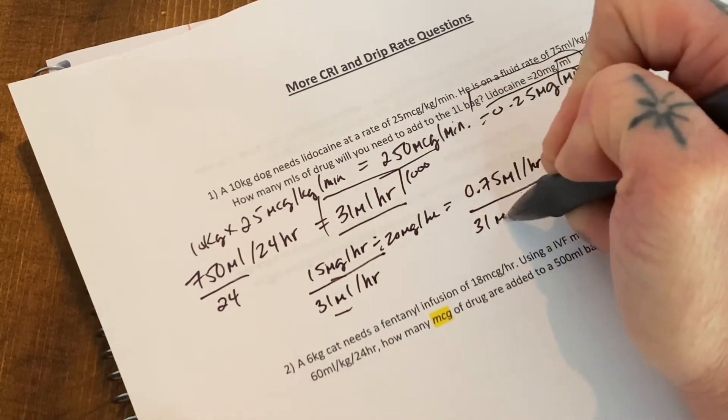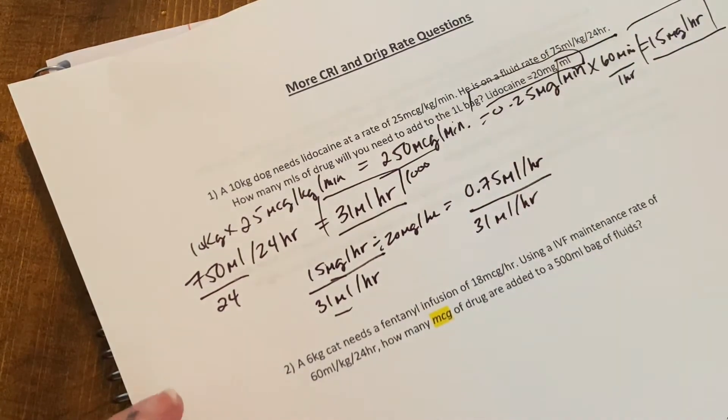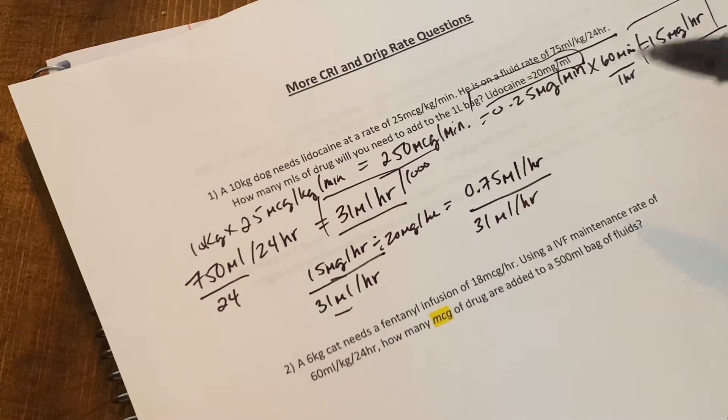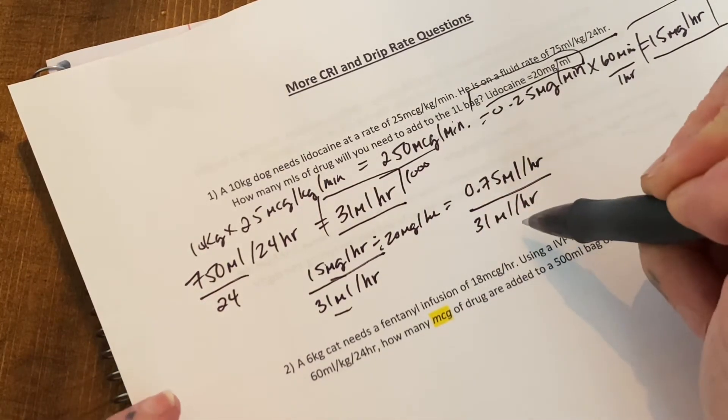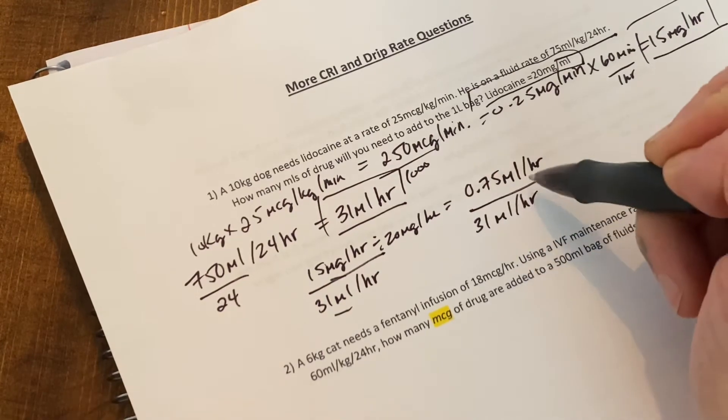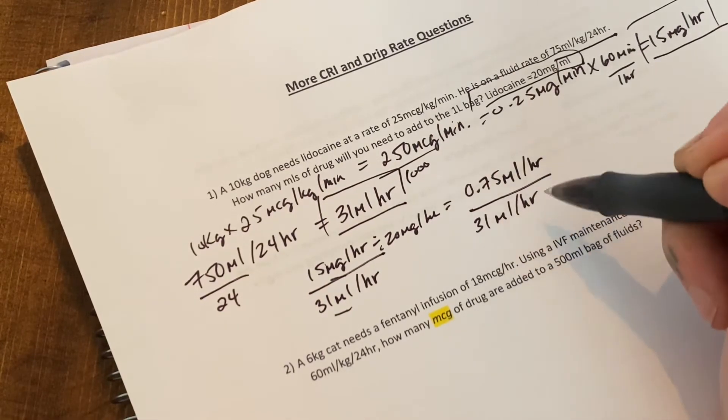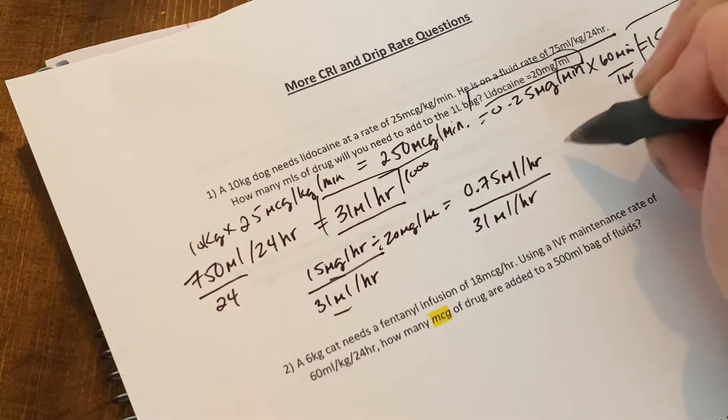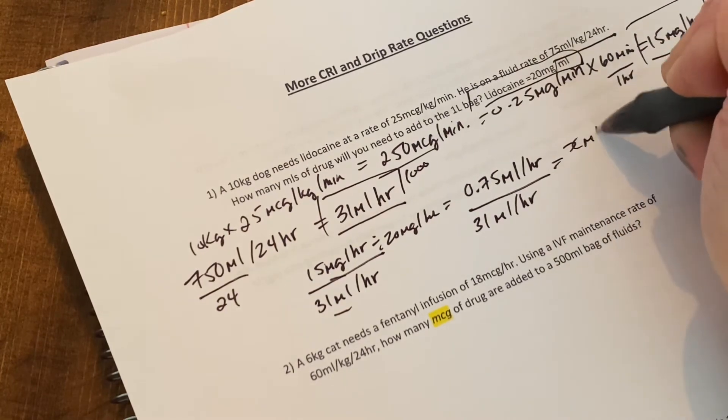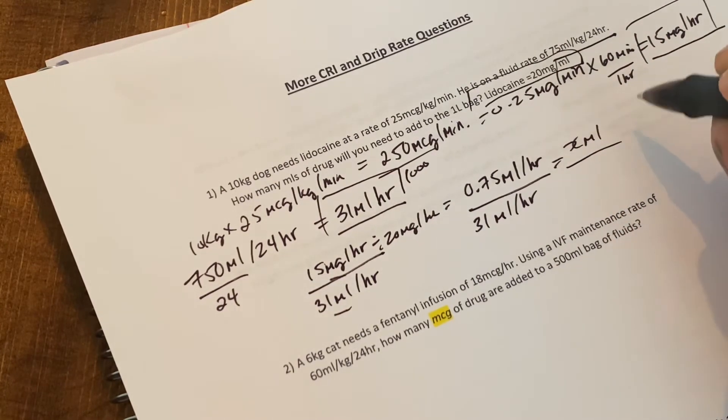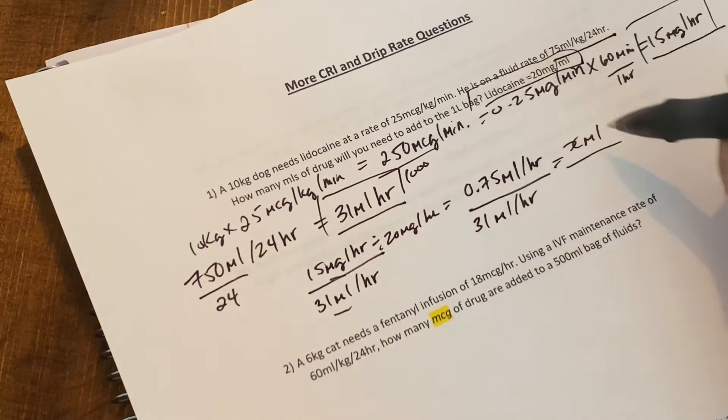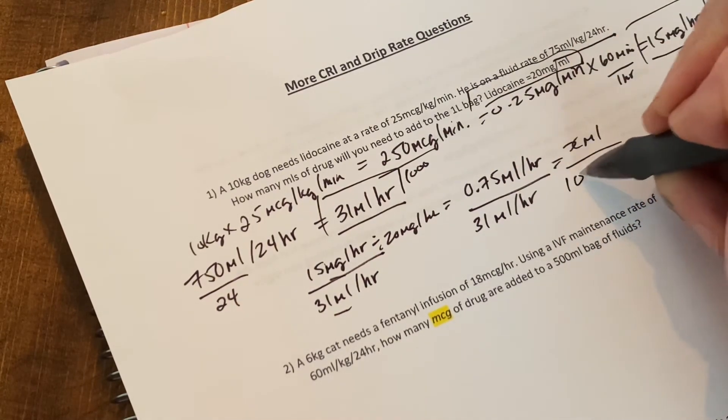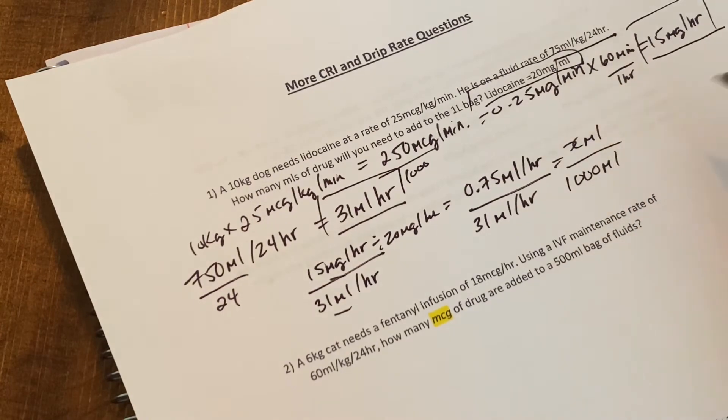Okay. Now we're in the same units. This is what's good about the formula is that it will catch you because you always need to have the same units over the same units. Otherwise you're going to make a mistake. So 0.75 mils per hour over 31 mils per hour equals our X mils of drug over a one liter bag. So this is in mils. One liter needs to be put in mils as well. So that's a thousand mils because there's a thousand mils to one liter. And then you just have to cross multiply.